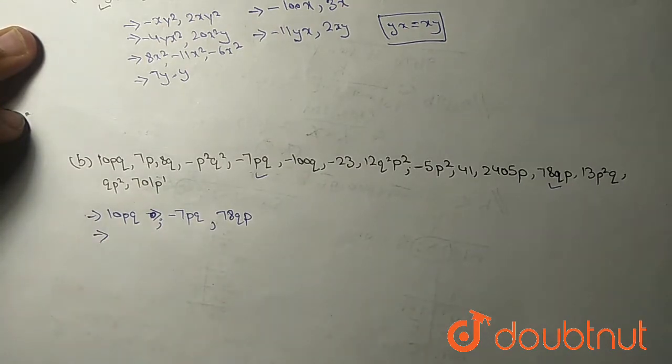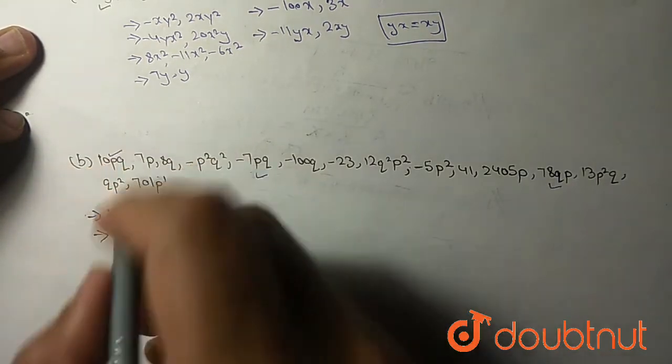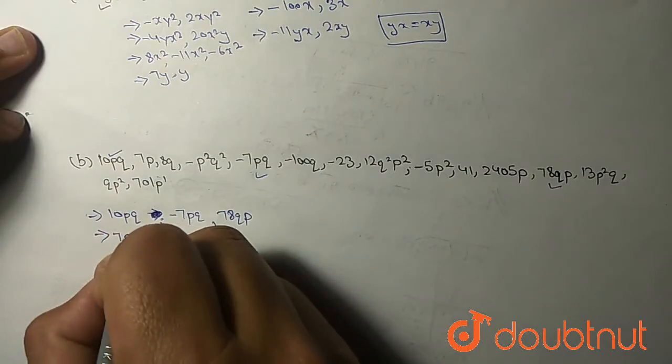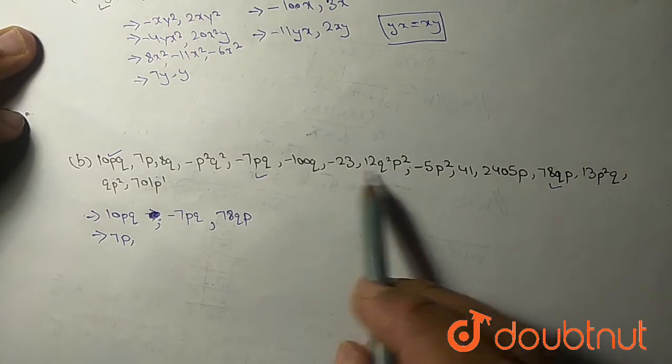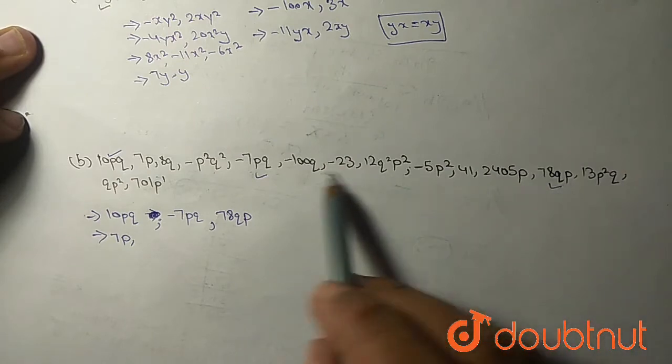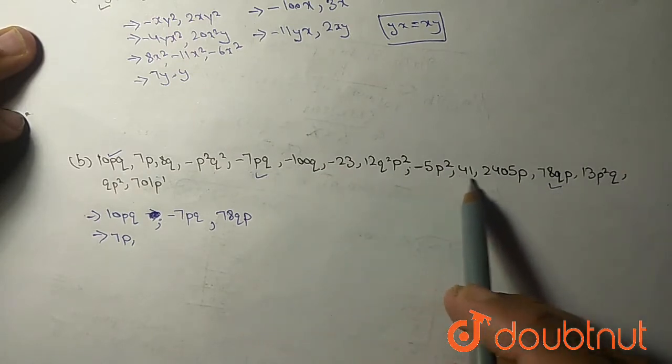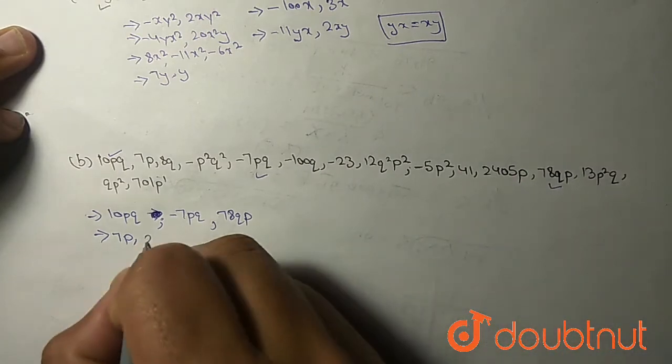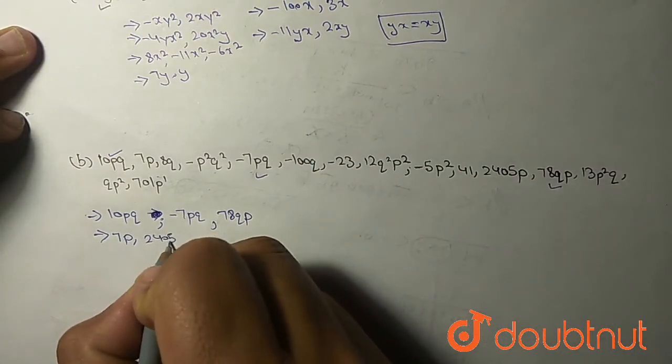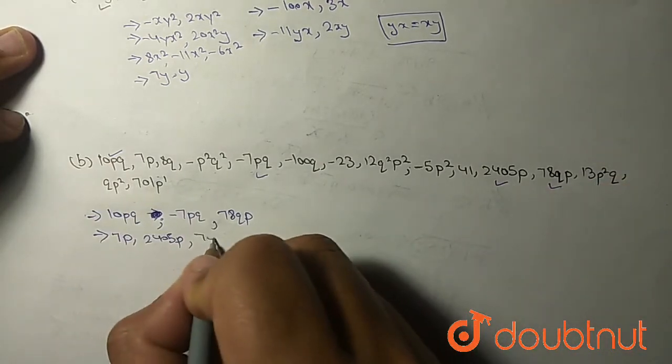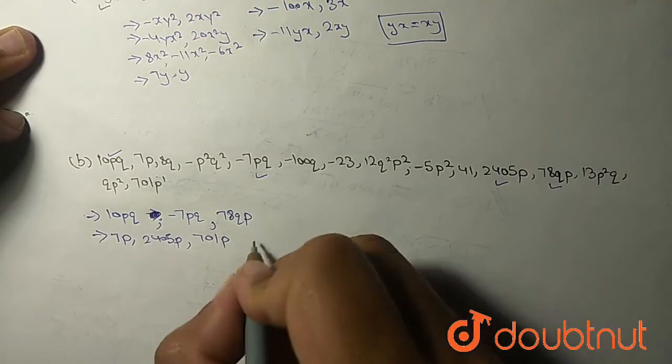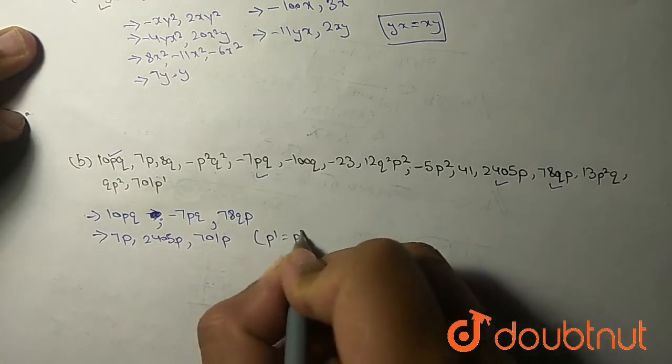Then 7p, 7p and in equation only p. Let's see, 405p, this and this 701p. pq to power 1 is equal to p, nothing different, it is same.